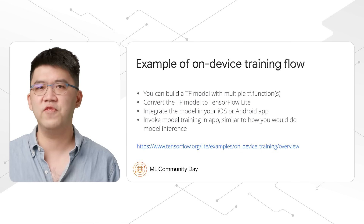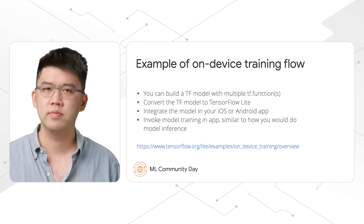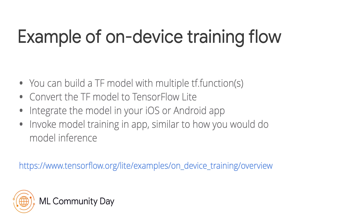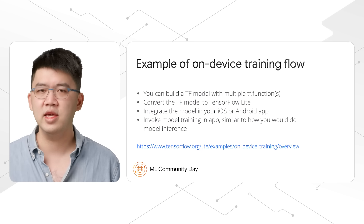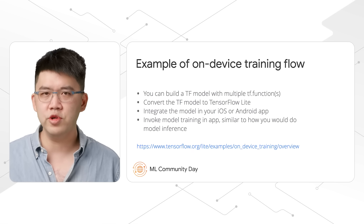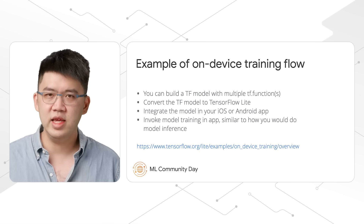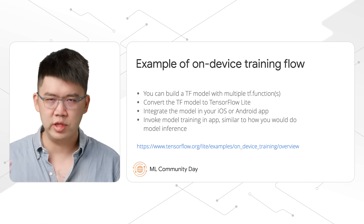The demo app and its source code can be found on the TensorFlow Lite on-device training page. To perform on-device training, we need to execute different functionalities like training and inference. You can build a TensorFlow model with multiple TensorFlow functions. For example, in our demo app, we defined a train function that trains the model with training data, an infer function that invokes the model inference, and save and restore functions that save and restore the trainable weights with the file system. After that, you can convert your TensorFlow model to TensorFlow Lite format, integrate the model into your iOS and Android app, and invoke the model training in the app, which is very similar to what you need to do with model inference.